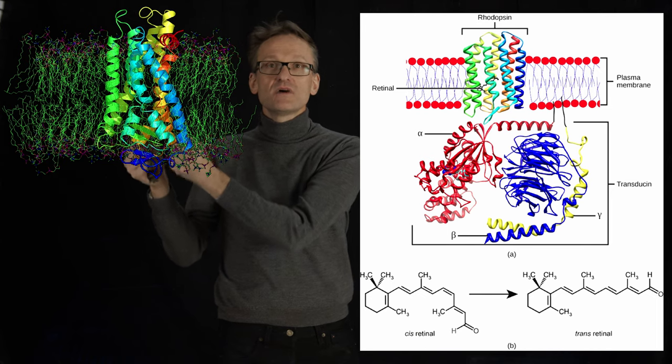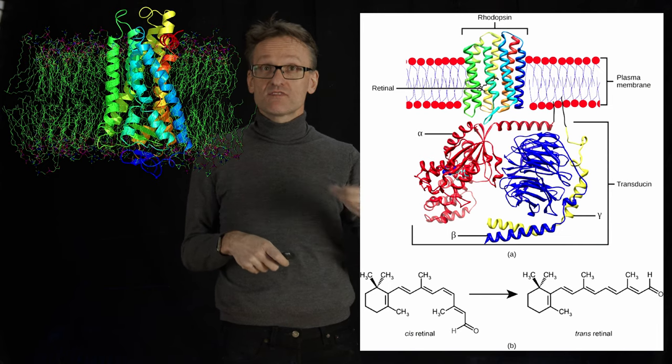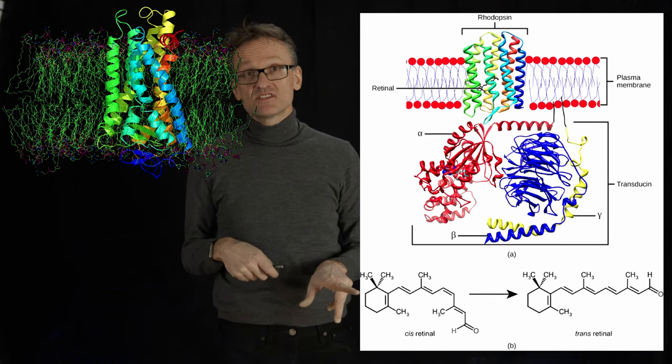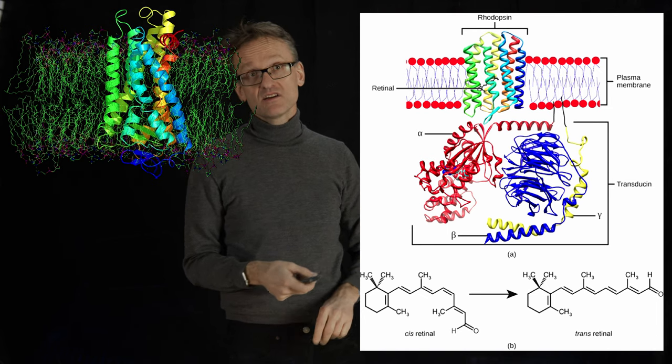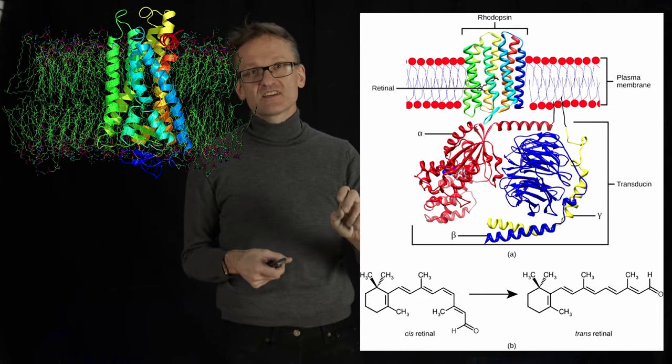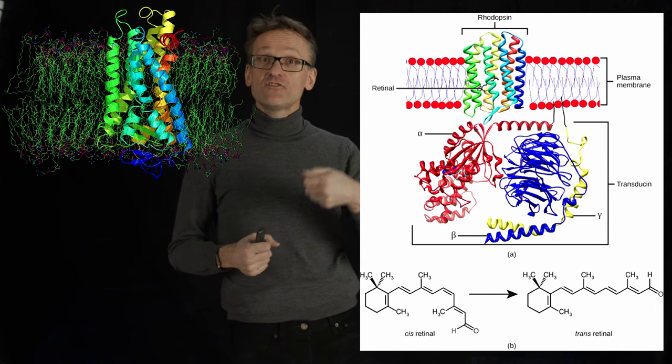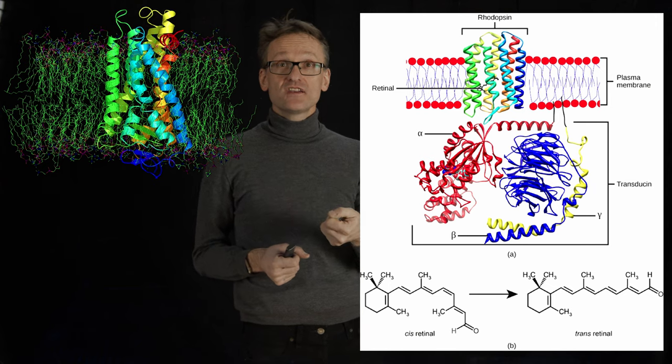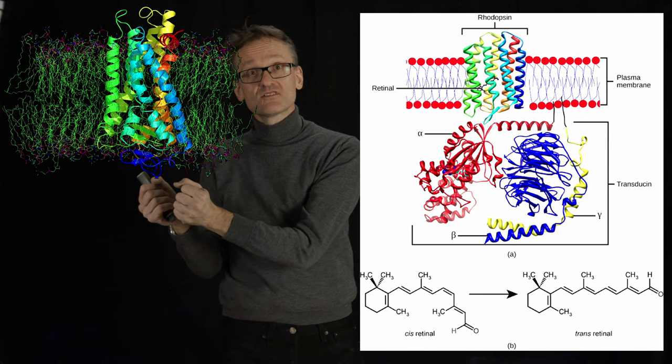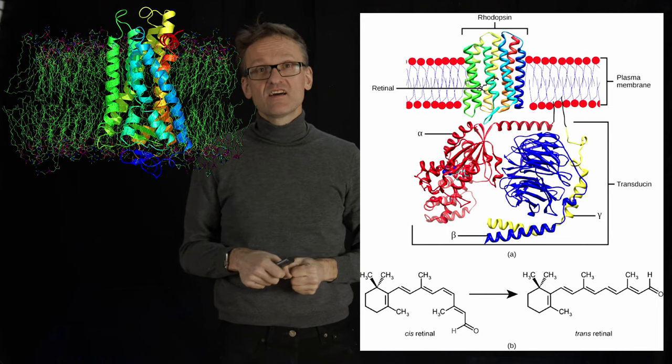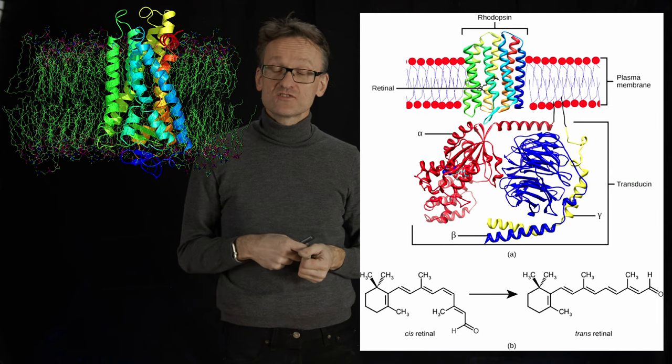Then it's bound to another protein, a so-called G-protein sitting on the other side, which then lets off a cascade. Here you can even see the reaction, so that on the left you have the cis conformation. A photon strikes that, turns it into a trans, a higher energy state. This higher energy state induces a conformational transition in the membrane that is coupled to the G-protein, and that eventually creates the nerve signal that makes us see.